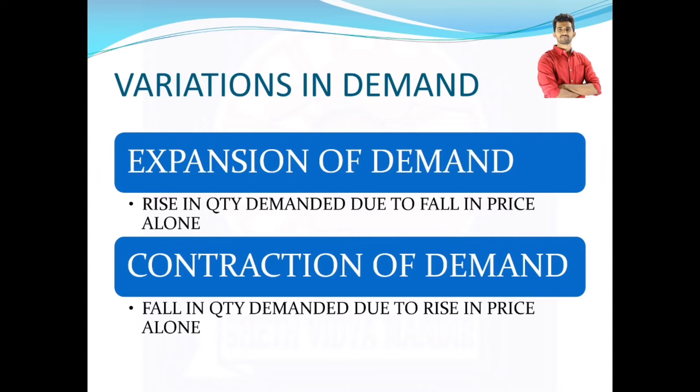Other factors in both these cases are remaining constant. That means the income is constant, the population is constant, there is no change in price of substitute goods or complementary goods, no expectation about future prices, no change in taste habits, or taxation. When only because of price there is change in demand, it is called as variation in demand and it is classified into two: expansion of demand and contraction of demand.